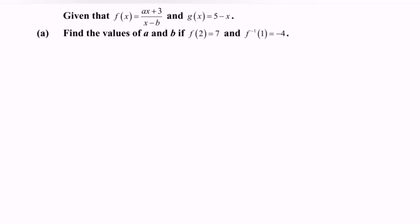Hi everyone, welcome to my channel. In this video I'm going to discuss an example for functions and graphs. Given the situation f(x) = (ax + 3) / (x - b) and g(x) = 5 - x, find the values of a and b if f(2) = 7.